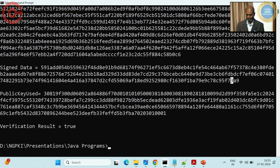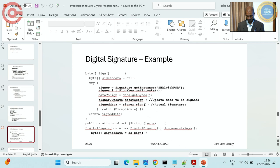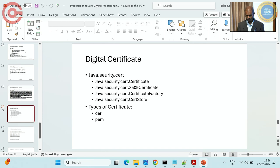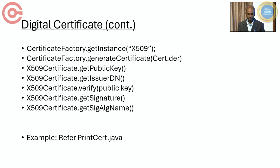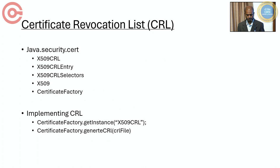Next is the digital certificate. We use java.security.cert package, which provides classes like Certificate, X509Certificate, CertificateFactory, CertStore, and CRL. The getIssuerDN() method is deprecated in newer Java versions; the replacement is getIssuerX500Principal(). CertificateRevocationList support is also available but will not be covered in detail here.